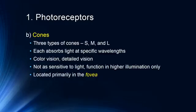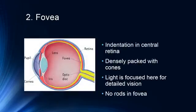Cones are located primarily in the fovea, which is an indentation in the back of the retina contained within what's called the macula. Macular degeneration involves degeneration of neurons in this part of the retina. The fovea is densely packed with cones, and light is focused here for detailed vision. The cornea and lens work together to focus light into this small indentation, allowing us to see clearly anything we look directly at.